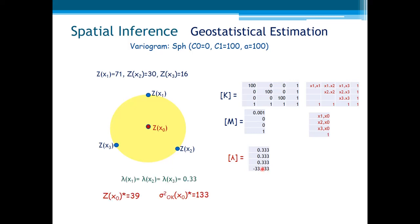And this is precisely the resulting estimated value at location x0. And this is the Kriging variance here.